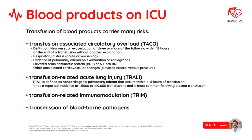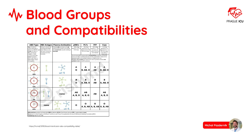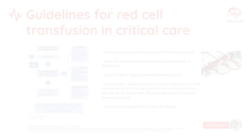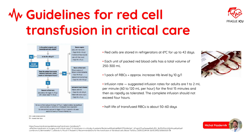Compatibilities of blood products are summarized in this table. The most frequently used blood product is red blood cell transfusion. Red cells are stored in refrigerators at 6 degrees Celsius for up to 42 days. Each unit contains a volume of approximately 250 to 300 ml. One pack increases hemoglobin level by approximately 10 g/L. Infusion rate is about 1 to 2 ml per minute for the first 15 minutes and then as rapidly as tolerated. The complete infusion shouldn't exceed 4 hours. Half-life of transfused red blood cells is about 50 to 60 days.